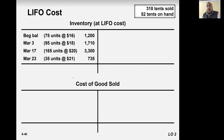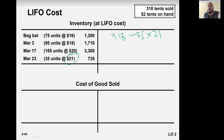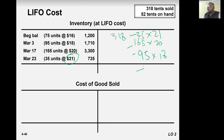Now LIFO — last in, first out. The last one purchased comes in at 21, so 35 units at 21, then 165 at 20. How much is left? 318 minus 165 equals 118, and 95 at 18 — the remaining 23 units would be from 75 units at 16 each.